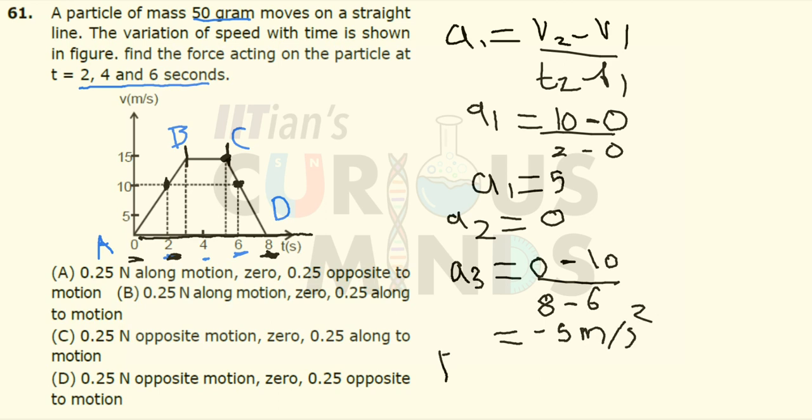So the force in the first case will be equal to mass into acceleration which is 50 gram. 50 gram in kg can be written as 0.05 into acceleration. Acceleration in the first case is 5, so it's equal to 0.25 Newton.